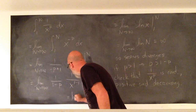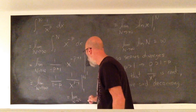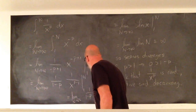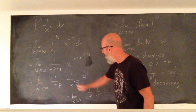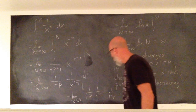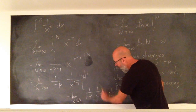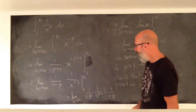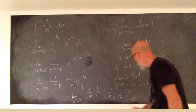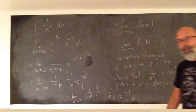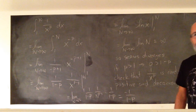When you plug in n and 1, you get minus 1 over (1 minus p) times n to the (p minus 1). Since p minus 1 is a positive exponent, as n goes to infinity you get 1 over infinity here, and consequently the limit is just negative 1 over (1 minus p). In other words, the integral converges, so the series converges.